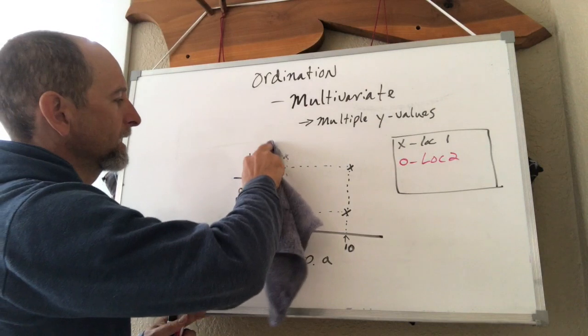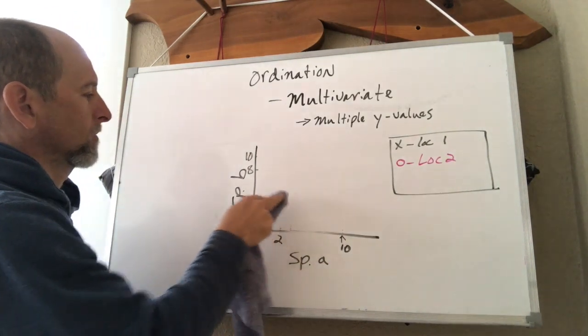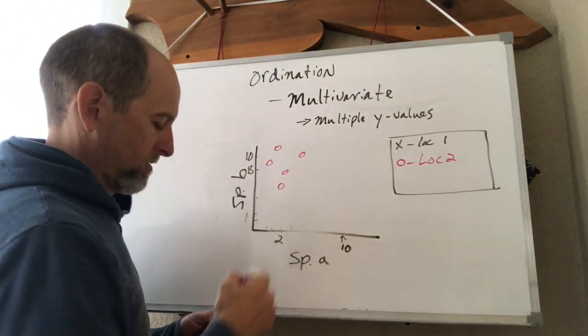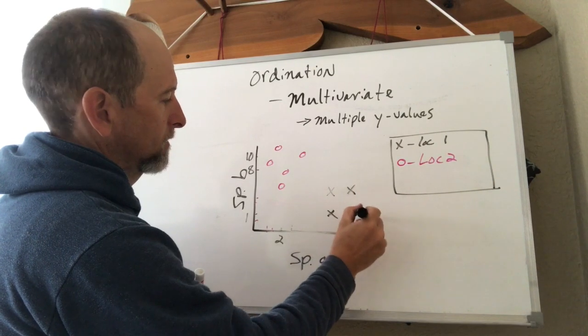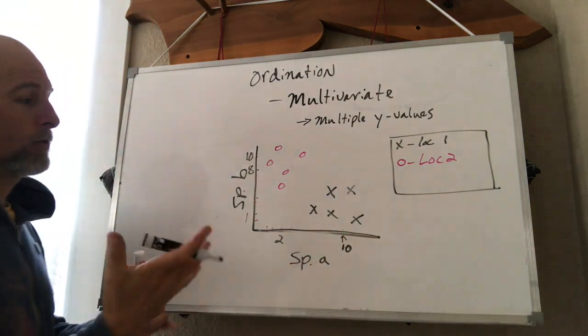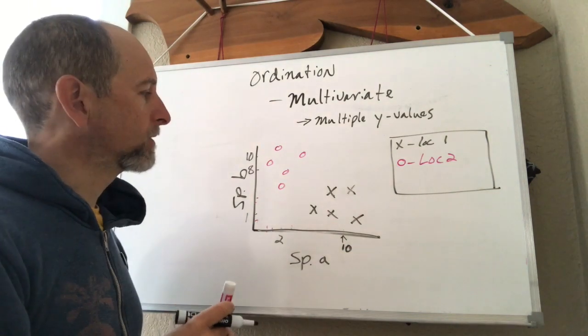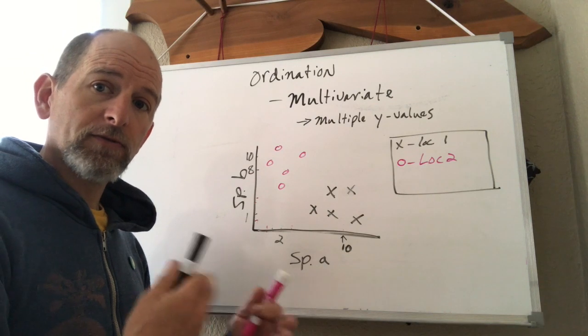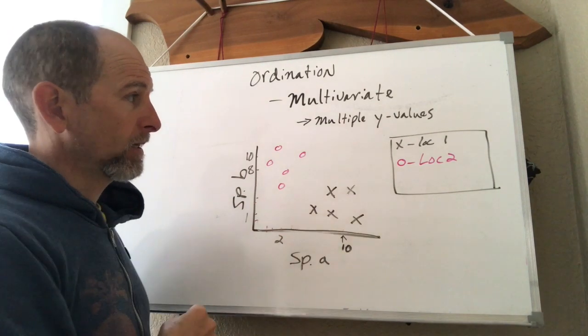The picture can get more complicated though. Where you could have a situation like, let's say, one ends up up here. And another group of samples ends up over here. Both of these communities would have a high amount of one species and a relatively low amount of the other. So they might have similar evenness, but distributed between two different species. Where species B is abundant in location two, species A is abundant in location one.